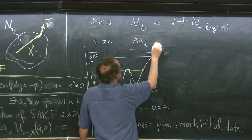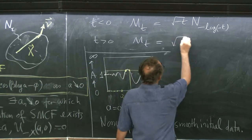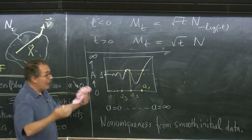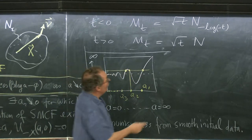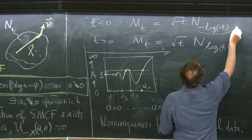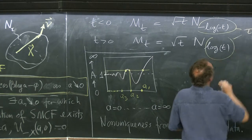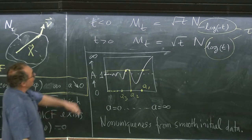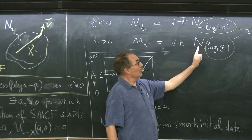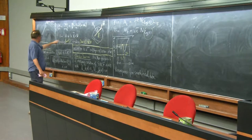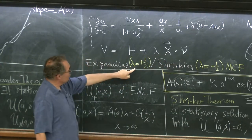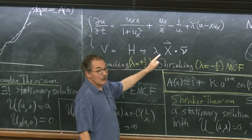For t positive, if you're looking for solutions after the singularity, you could try to write them as self-similar expanding solutions, or you can look for things that are not self-similar by allowing N to depend on time. In both cases, mean curvature flow for M(t) is equivalent to an autonomous evolution equation for N as a function of tau, where the velocity equals mean curvature plus lambda times x dot nu. For lambda equals plus one-half, you get expanding mean curvature flow; for lambda equals minus one-half, you get shrinking mean curvature flow.